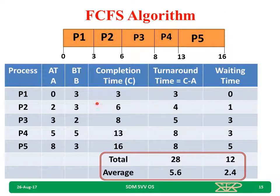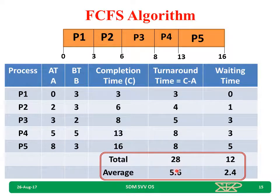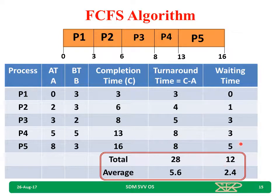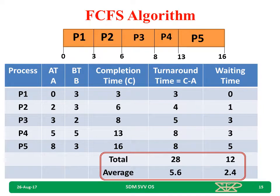This is the conclusion. We have completion time, turnaround time, and waiting time of each process. Total turnaround time is 28; divide by 5 processes to get average turnaround time. Total waiting time is 12; divided by 5 gives average waiting time of 2.4. This is the way to find turnaround time, average turnaround time, waiting time, and average waiting time for a given set of processes using the FCFS algorithm.